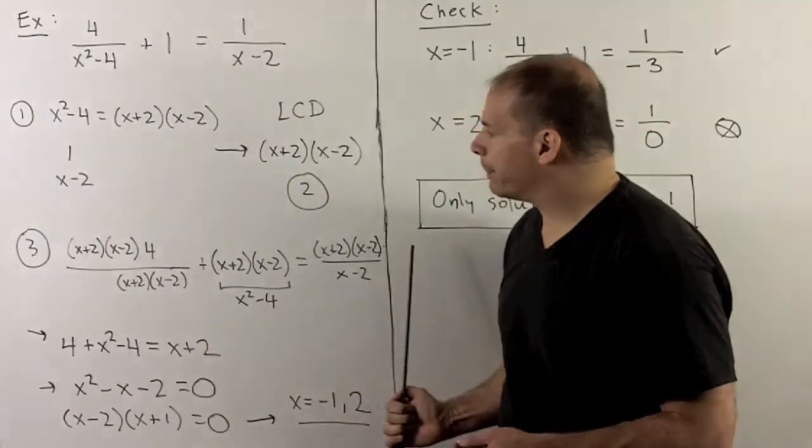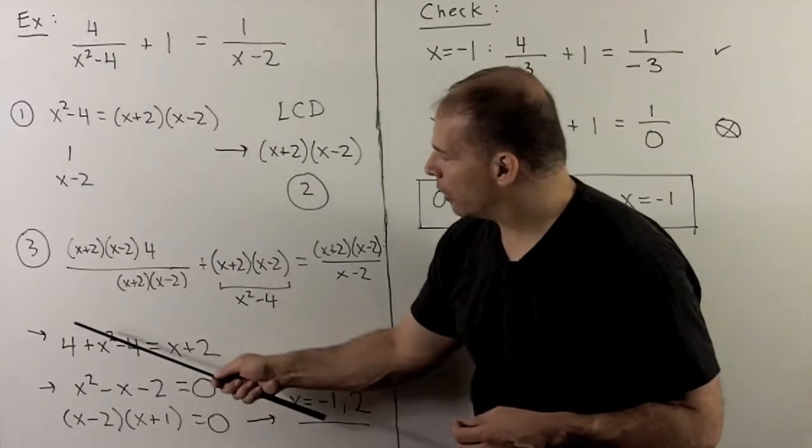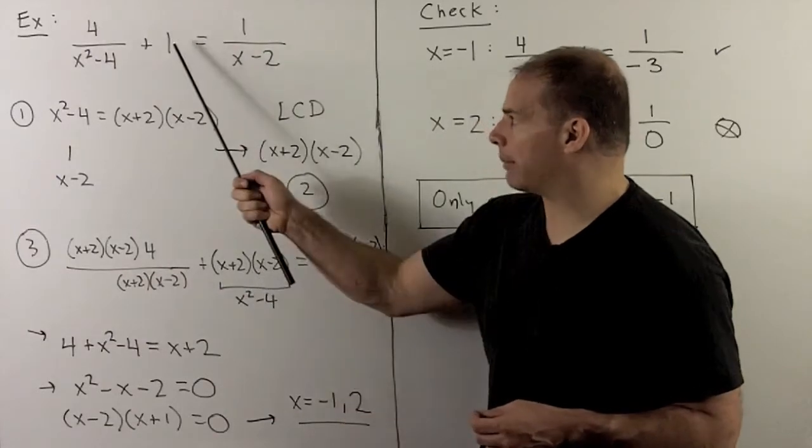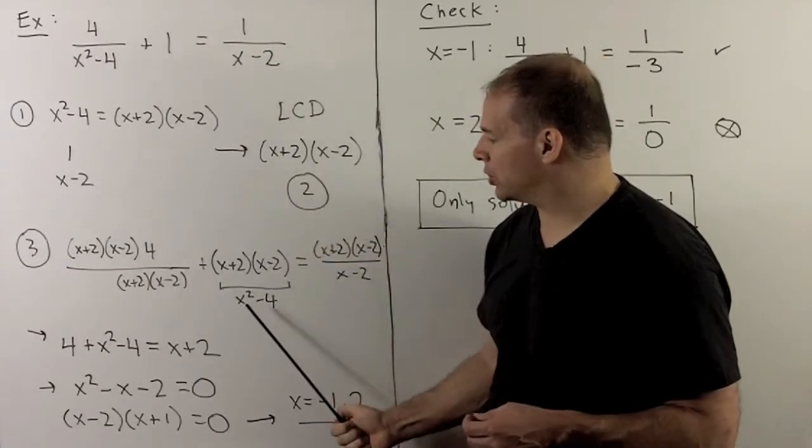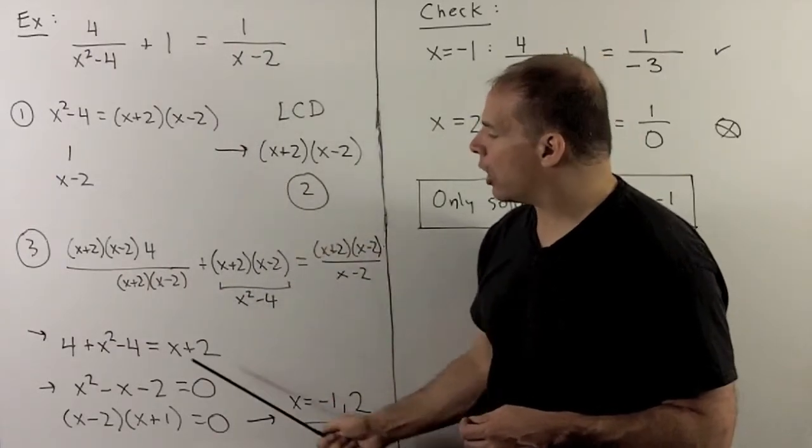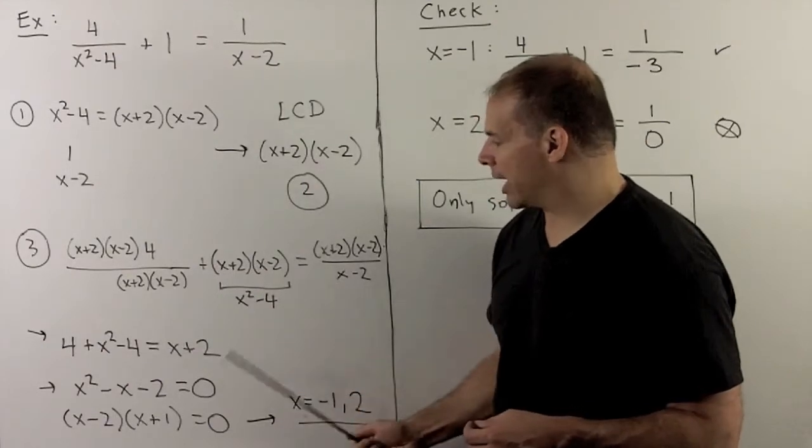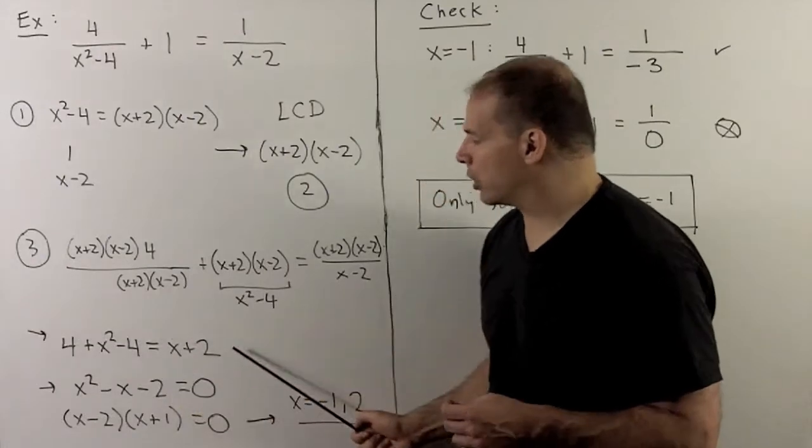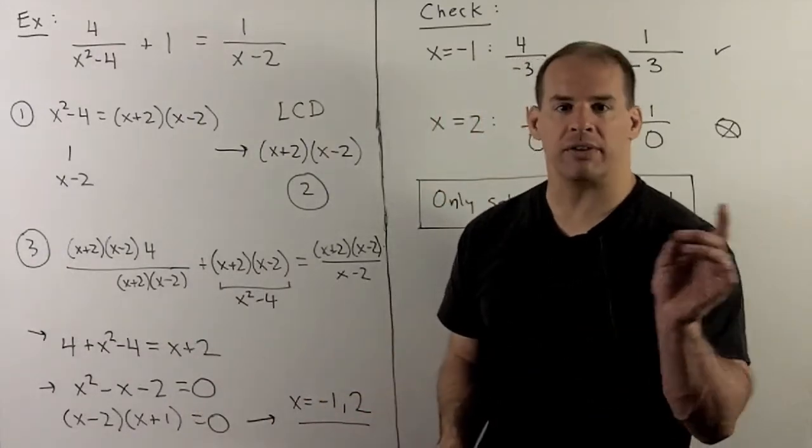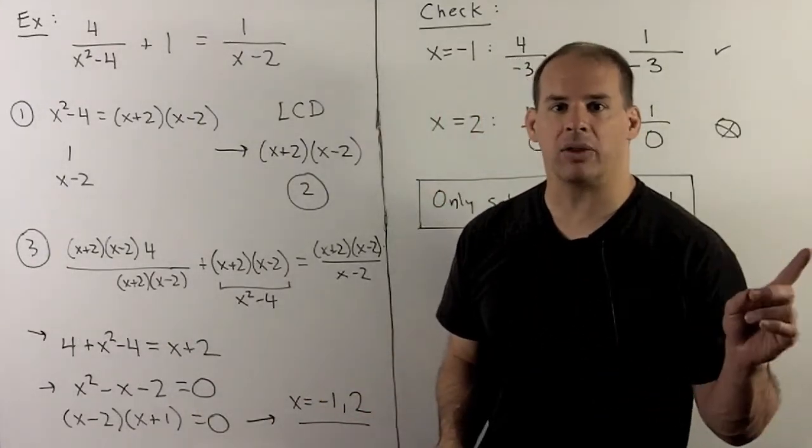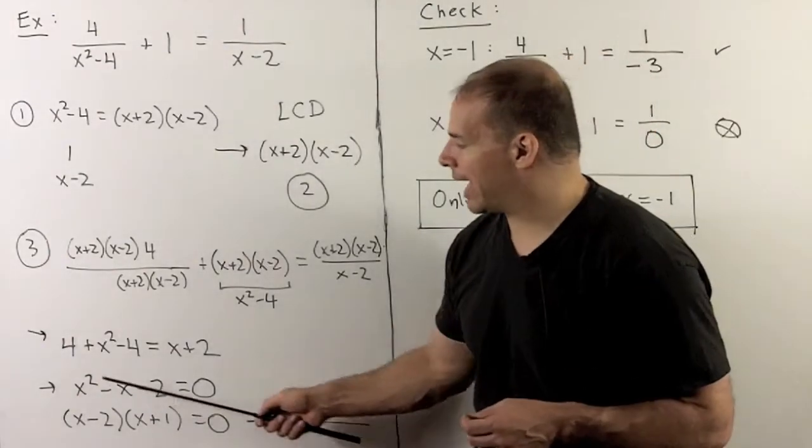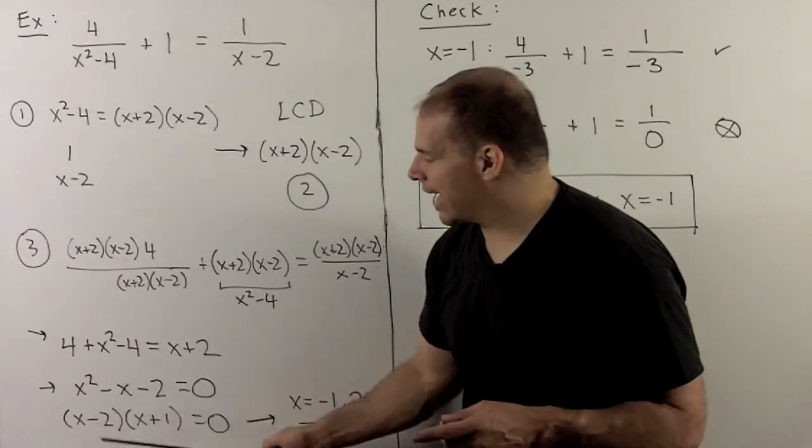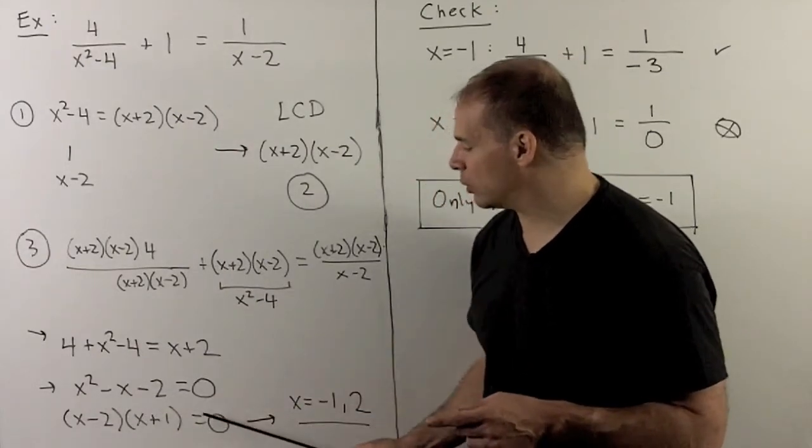When I simplify, what comes out? I have 4 from the first term, x squared minus 4 from the second term, because we're just multiplying by 1. I'll just put it back into its original form. On the other side of the equals, I'm going to have x plus 2. This is a polynomial equation. We push everything to one side, have 0 on the other, and then we see if we can factor. I'm looking at x squared minus x minus 2 equals 0. This factors into x minus 2 times x plus 1 equals 0.